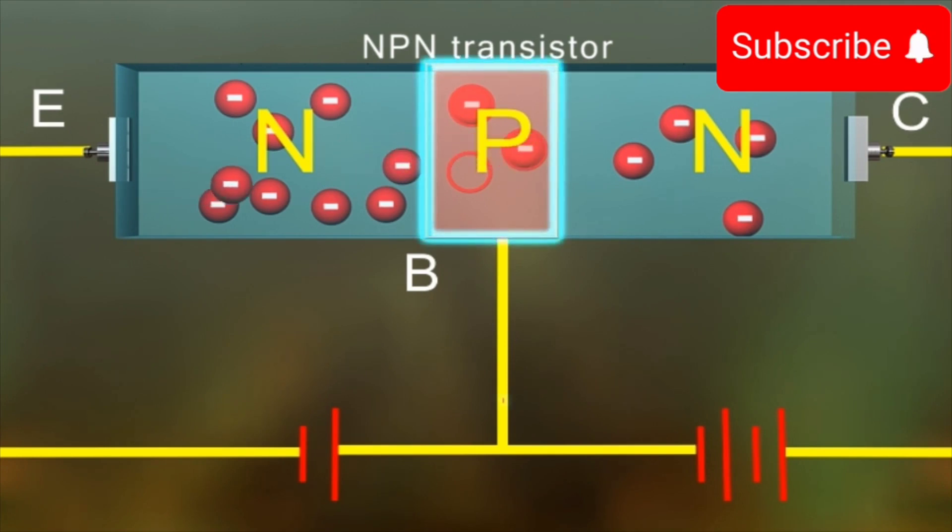The region forming the base is very thin and has smaller proportion of impurities, resulting in less number of holes.